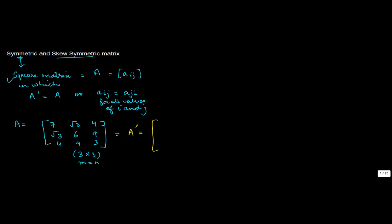Now if you find the transpose of A, you convert each row into a column. You get the first row as 7, root 3, 4 — the second row as root 3, 6, 9 — and the third row as 4, 9, 3. Comparing A and its transpose, we notice that A equals the transpose of A, so we call this matrix a symmetric matrix.